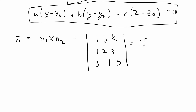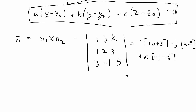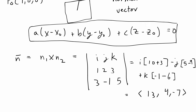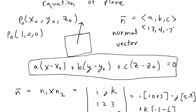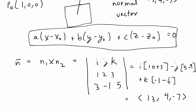This is going to be equal to i times (2×5 = 10, minus 3×(-3) = +3) minus j times (1×5 = 5, minus 3×3 = 9) plus k times (1×(-1) = -1, minus 3×2 = 6). So if I simplify that and write it in coordinate form, that's going to give me (13, 4, -7). So the normal vector that we want to plug in is (13, 4, -7), and now we know the point and the normal vector to plug into the planar equation and we have enough information to solve the problem.